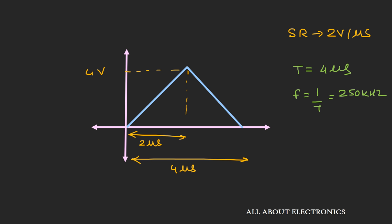So whenever we apply a square wave pulse of 250 kHz, the output will be a triangular wave with a peak amplitude of 4V. If instead we want a triangular wave with 10V output, the op-amp requires 5 microseconds to reach 10V, giving a total period of 10 microseconds, corresponding to 100 kHz. As input frequency increases, the output gets more and more distorted, so you need to select an op-amp appropriate for your application.